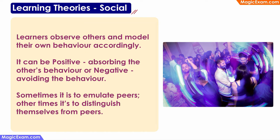The social learning theory says that learners will observe others and model their own behavior accordingly. This theory is mainly applicable for young learners such as children, teenagers, or young adults. This change can be positive or negative. For example, if you like someone's behavior and mannerisms, you might positively change your own behavior to be similar. Or if you don't like someone's behavior, you will consciously try to avoid that kind of behavior — a negative change. That is what social learning is all about.